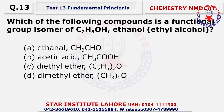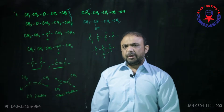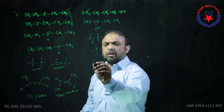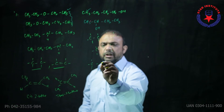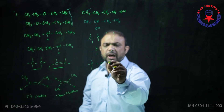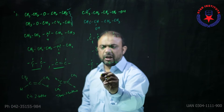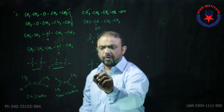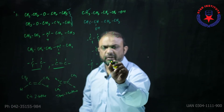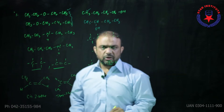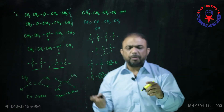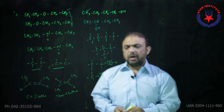Question number thirteen: Which of the following compound is a functional group isomer of ethanol — that is ethyl alcohol? Ethyl alcohol could be with dimethyl ether, because the formula of ethanol is C2H5OH, and dimethyl ether possesses the same molecular formula but a difference in connectivity of the oxygen atom. So this is a functional group isomer — one is an alcohol and the other is an ether.